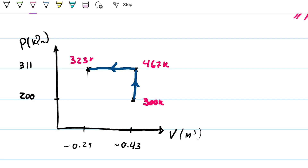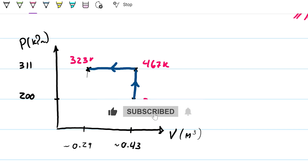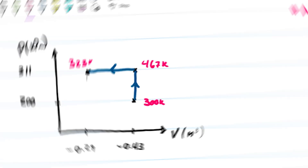From state 2 to 3, both internal energy dropped — evidenced by the temperature change — and volume dropped, so the energy must be released. Since this is a closed system, it can only be released as heat, which is how we get the 144 kilojoules leaving. It was a long but hopefully straightforward problem. If you have any questions, please let me know in the comments below. If this video was helpful, consider giving it a like.